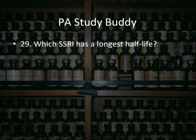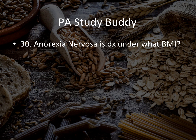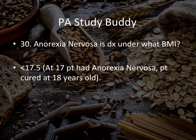Question twenty-eight: which SSRI has the longest half-life? They'll give you different SSRIs and ask which has the longest — that is fluoxetine, Prozac. Question twenty-nine: anorexia nervosa is diagnosed under what BMI? The answer is less than 17.5. The way I remember: at 17 years old the patient had anorexia but was cured at 18. BMI of 17 is anorexia; 18 is already above the mark.